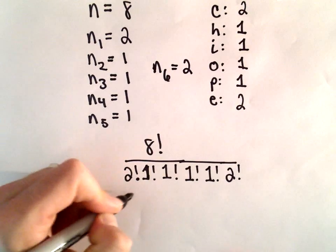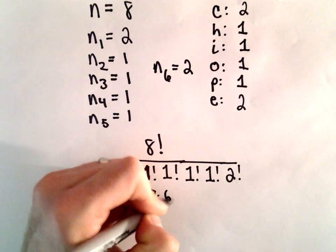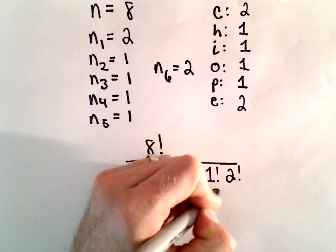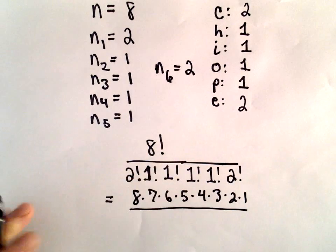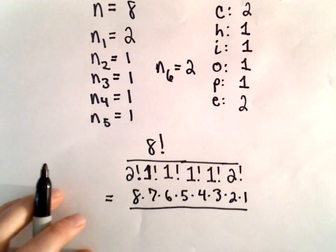So now just arithmetic. This is 8 times 7 times 6 times 5 times 4 times 3 times 2 times 1. Of course, you could always use a calculator. This is how I simplify them by hand.